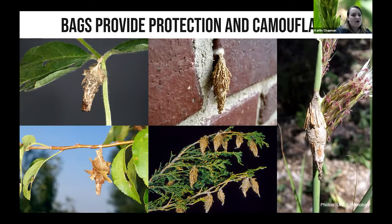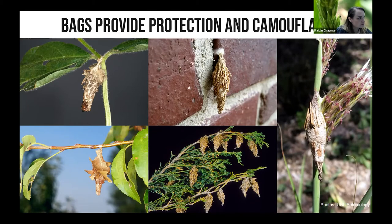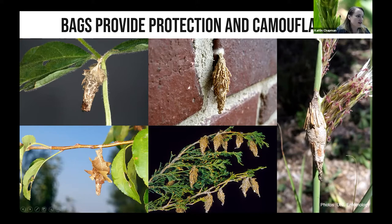Bagworms can have a whole slew of different hosts. Their major hosts include evergreens like pine, spruce, and juniper, but they can also infest deciduous trees like oak, locust, and sycamore. Here are some interesting pictures: a bagworm on a soybean plant, on deciduous trees, one that tied off its bag on the side of a building, one on an evergreen, and one on a prairie grass — so they have quite a wide host range.